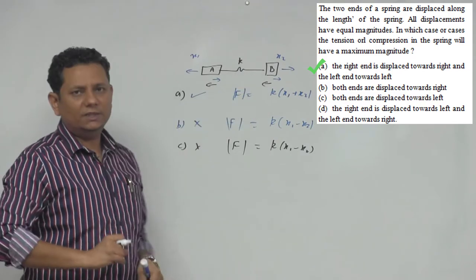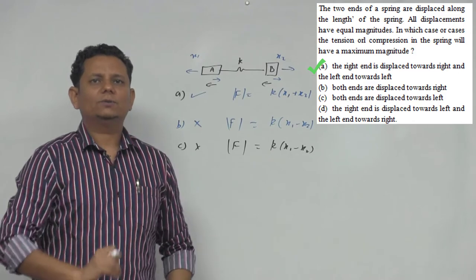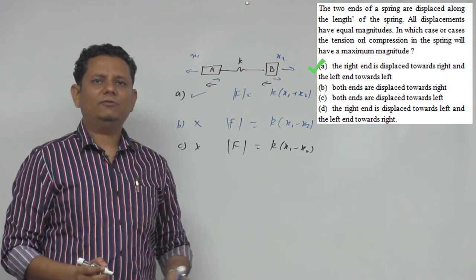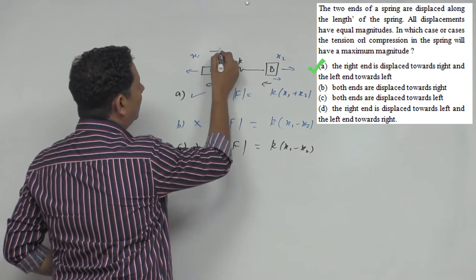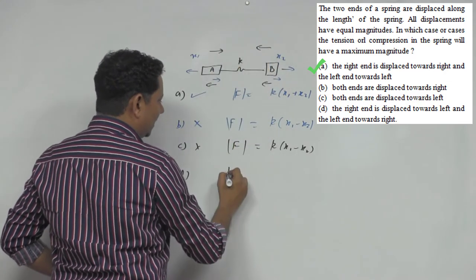The fourth option: the right end is displaced towards the left and the left end towards the right. In this case, both ends move towards the center.